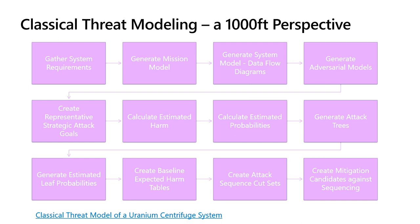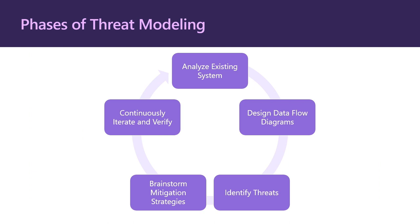I'm not going to go over a classical threat modeling perspective today, but it's interesting to see. This is what a threat model looks like in the DoD — probably the most rigorous way to create threat models. I actually did a threat model on uranium centrifuge systems, Stuxnet, and it's a very long process. When we do threat modeling in cloud applications today, we use a more condensed version. This is the core algorithm for developing threat models in commercial industry, and anything can be pulled from the classical model into the condensed version depending on your system, requirements, and how thorough you need to be.